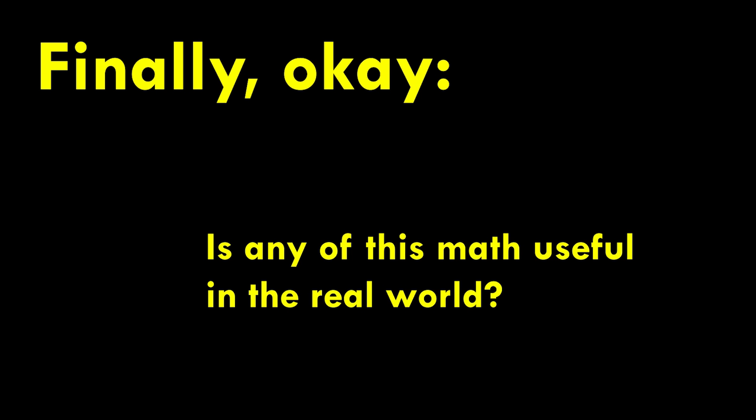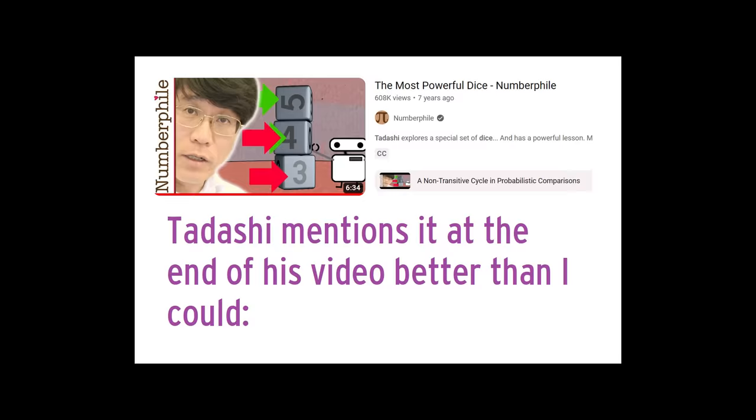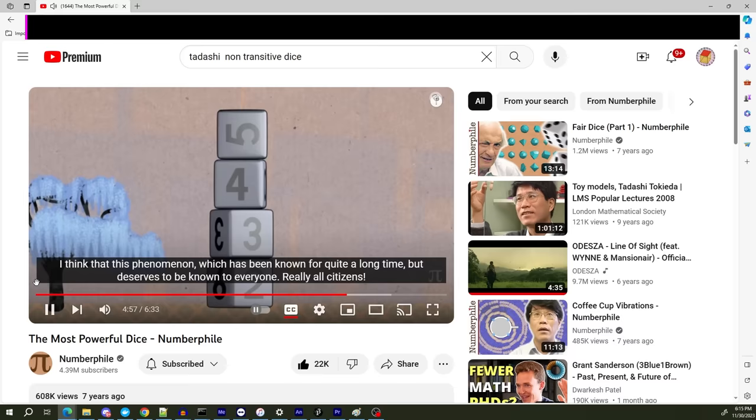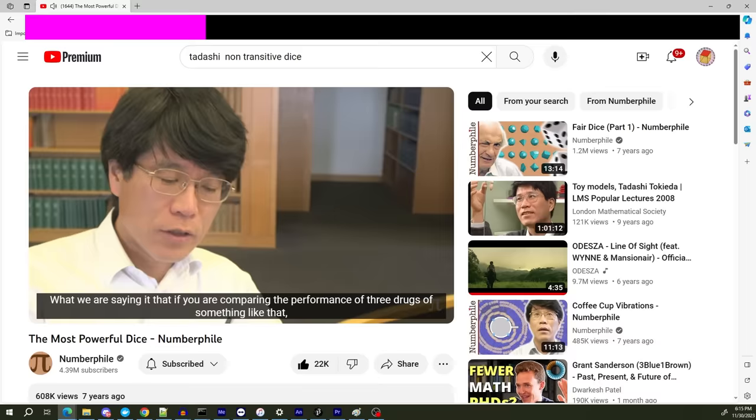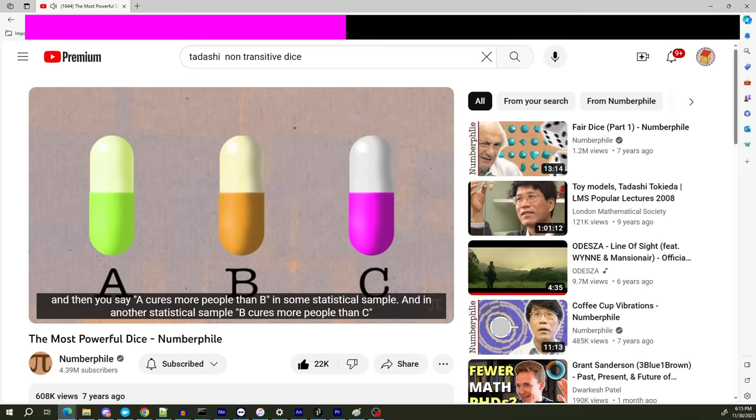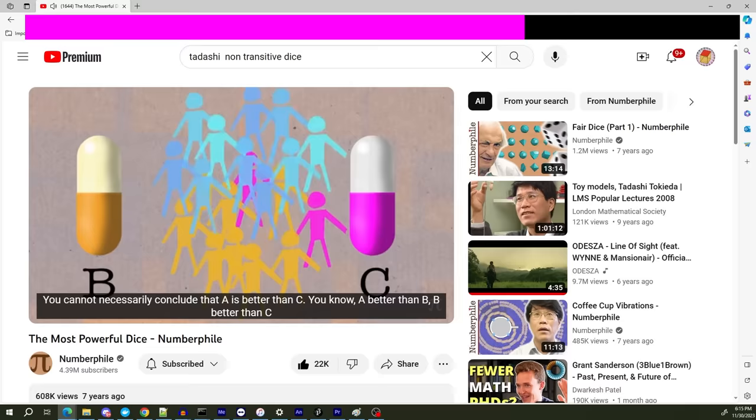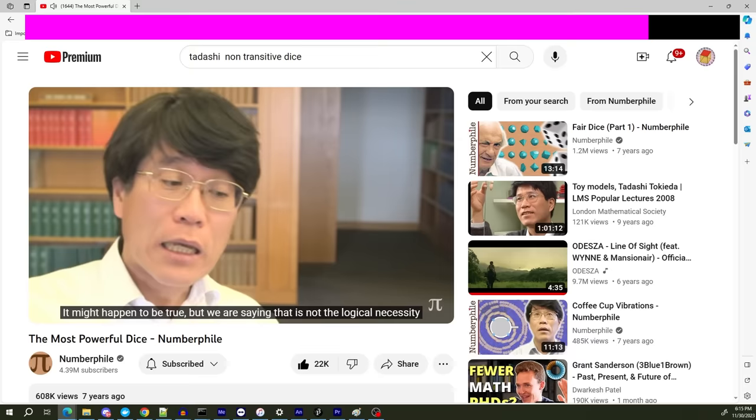Finally, okay, is any of this math useful in the real world? Yes, in fact, Tadashi mentions it at the end of his video better than I ever could. I think that this phenomenon deserves to be known to everyone, really all citizens. What we are saying is that, you know, if you are comparing, say, performances of three drugs or something like that, and then you say, well, A cures more people than B in some statistical sample, and in other statistical sample, B cures more people than C, you cannot necessarily conclude that A is better than C. It might happen to be true, but we are saying that that's not a logical necessity.